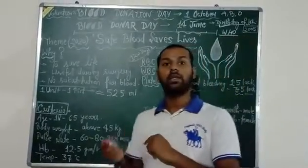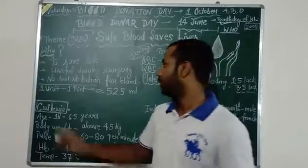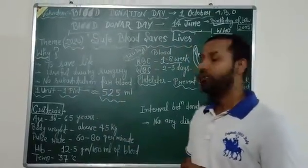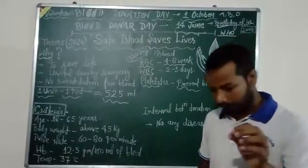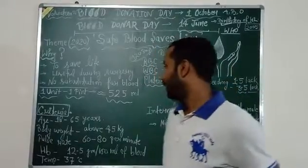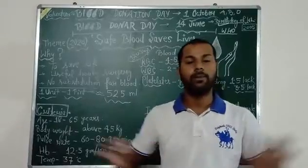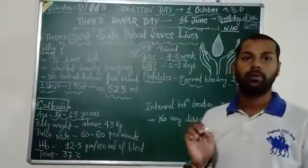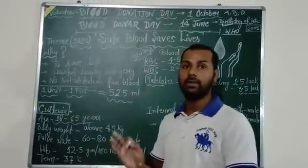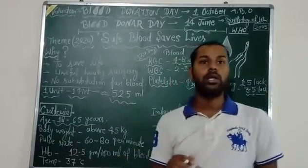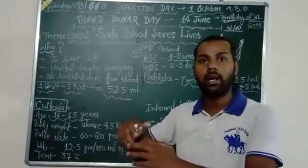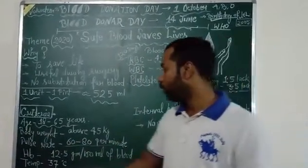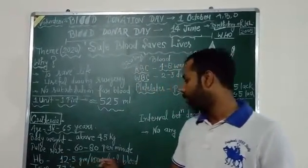How much blood can you donate? The amount to donate is 1 unit. One unit means one pint, and one pint is equal to 525 ml. You can donate 1 unit at a time. Which persons can donate blood? Not everyone can donate. The age should be between 18 to 65 years. Body weight should be above 45 kg. Pulse rate should be 60 to 80 per minute. Hemoglobin should be more than 12.5 gram per 100 ml of blood.